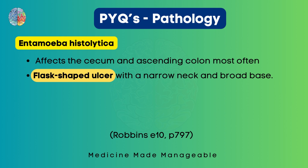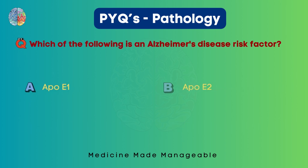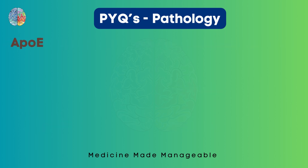A reference has been added for further reading. The answer is Entamoeba histolytica. Now, which of the following is an Alzheimer's disease risk factor? Is it ApoE1, E2, E3, or E4?